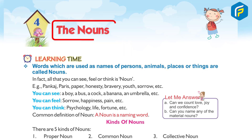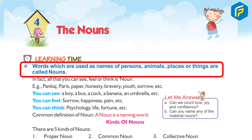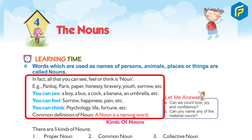Chapter 4: The Nouns. Learning time. Words which are used as names of persons, animals, places or things are called nouns. In fact, all that you can see, feel or think is a noun. Examples: Pankaj, Paris, paper, honesty, bravery, youth, sorrow, etc. You can see a boy, a bus, a cock, a banana, an umbrella, etc. You can feel sorrow, happiness, pain, etc. You can think: psychology, life, fortune, etc. Common definition of a noun: a noun is a naming word.